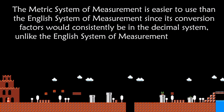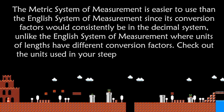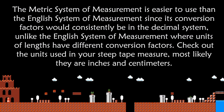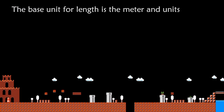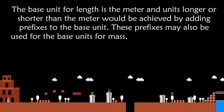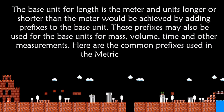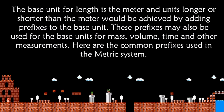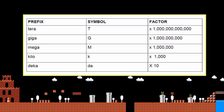The metric system of measurement is easier to use than the English system since its conversion factors are consistently in the decimal system, unlike the English system where units of length have different conversion factors. Check out the units on your steel tape measure — most likely they are inches and centimeters. The base unit for length is the meter, and units longer or shorter than the meter are achieved by adding prefixes. Here are the common prefixes: tera, giga, mega, kilo, and deka, each with their symbol and factor. For example, k or kilo is equal to one thousand.